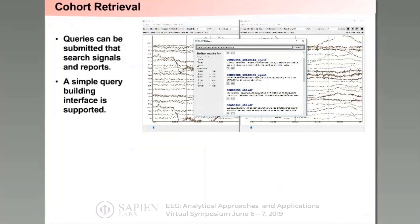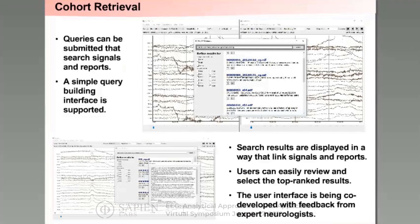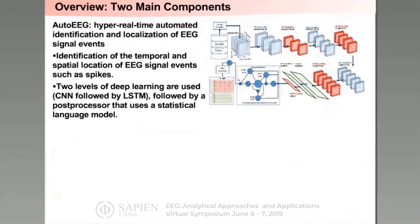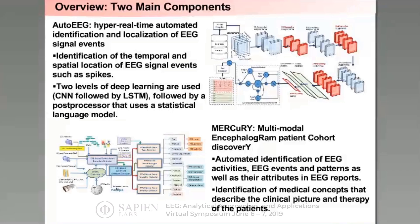This was developed in collaboration with our colleagues at University of Texas at Dallas and is part of what's called the cohort retrieval system. You can fill out forms or do natural language queries, and it brings back a list of EEGs matching your search criteria. It uses a deep learning-based system that identifies events in EEG signals, and also a natural language processing system that analyzes EEG reports, parses them, looks for concepts, and relates those concepts in graphs to allow interpretation of the reports.